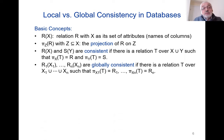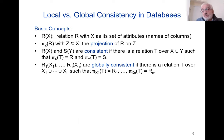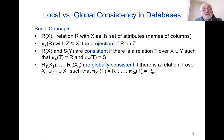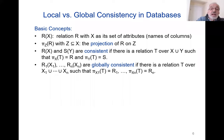A relation in databases is an ordinary mathematical relation, except that the names of the columns — if you think of a relation as a table — have names which are called attributes. So the attributes are the names of columns. Pi_Z of r, where Z is a subset of the set of attributes of the relation r, is the projection of r on Z. In other words, you erase all the columns not in Z and keep only the columns with attributes from Z.